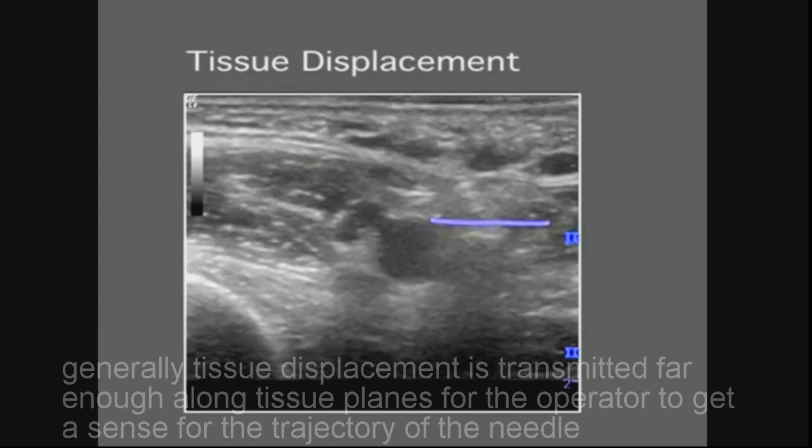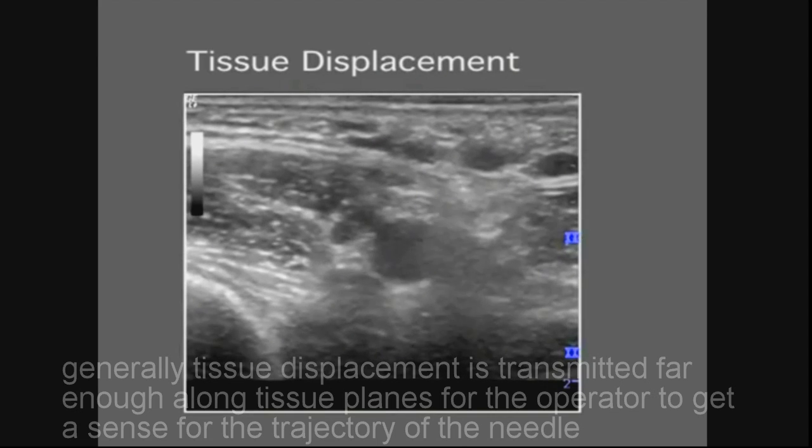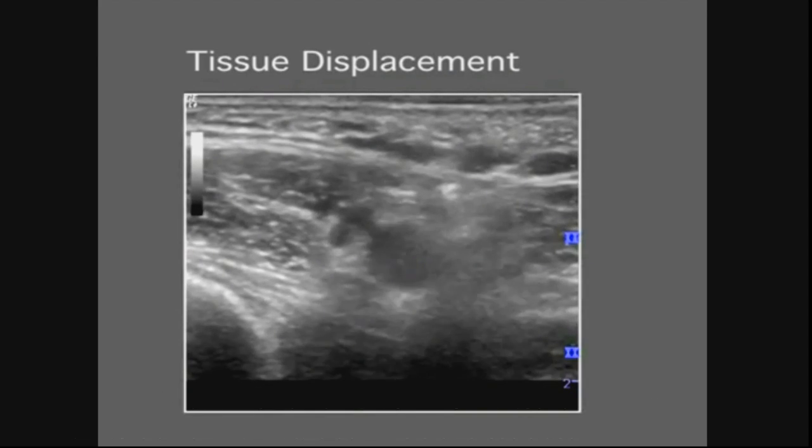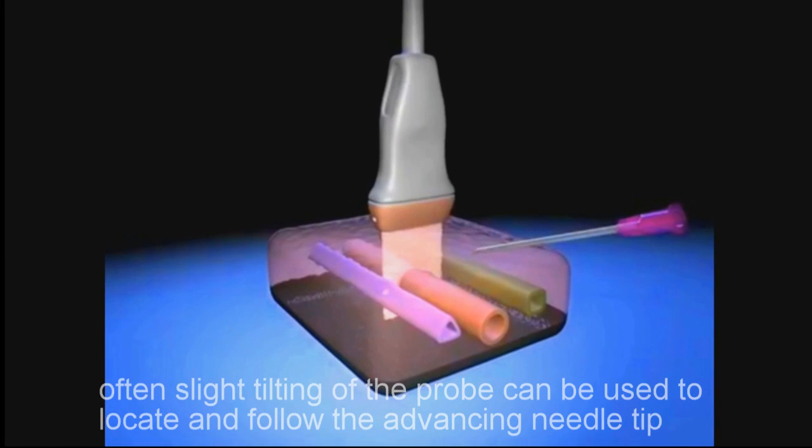Generally, tissue displacement is transmitted far enough along tissue planes for the operator to get a sense for the trajectory of the needle. Often, slight tilting of the probe can be used to locate and follow the advancing needle tip.